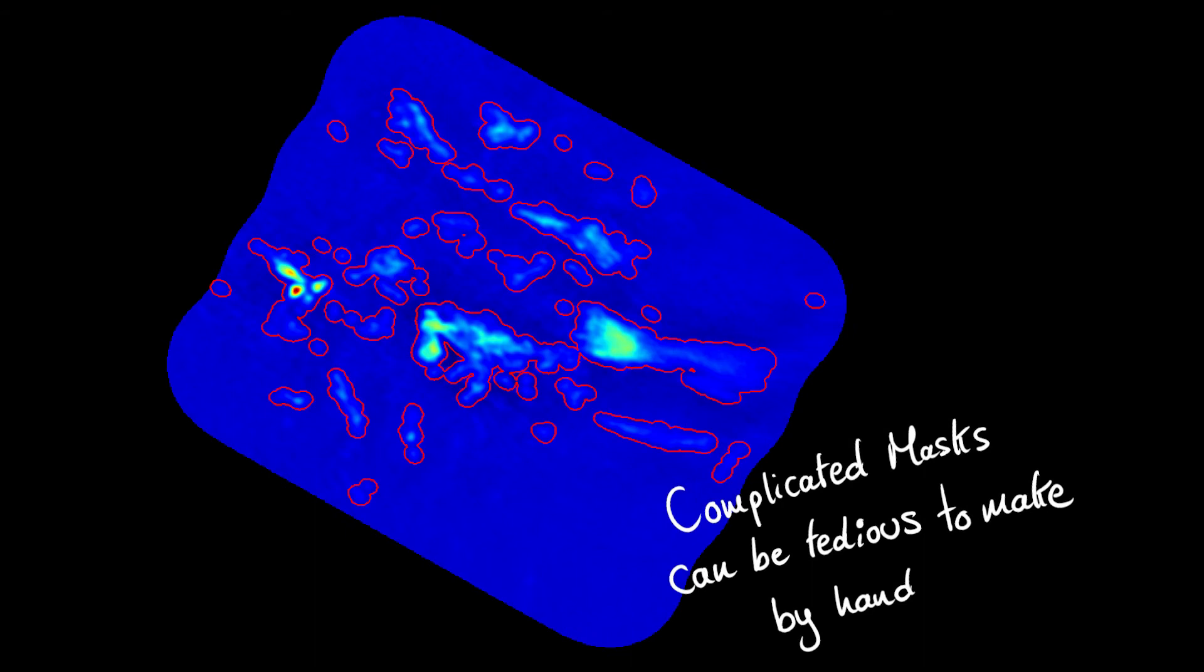Mask creation can be tedious to do by hand, especially for spectral data cubes where each channel could need its own mask. For example, consider these spectral line observations from the H2 region, RCW 120.